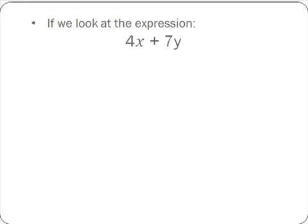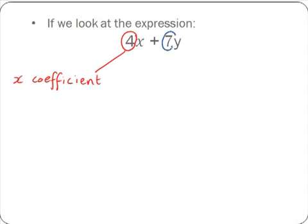Now, if we look at the expression 4x plus 7y, we are going to look at the 4 in front of the x. The 4 in front of x means 4 multiplied by x, and the 4 in this case is called the x coefficient, because it is multiplied by the x. Similarly, 7 is called the y coefficient, because it is multiplied by the y.